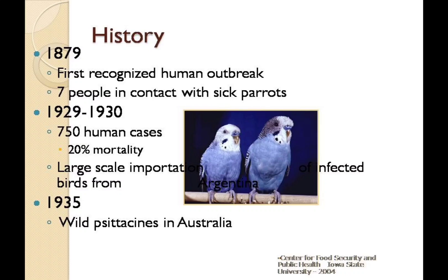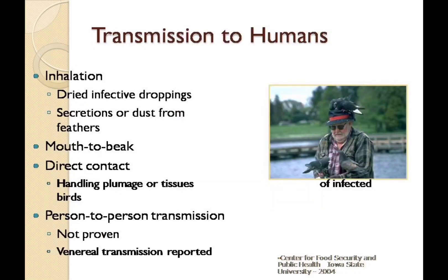Since the 1930 epidemic, numerous countries have instituted a complete import ban on psittacine birds. Smuggling has become common in the United States. In 1935, Chlamydophila psittaci was found to be prevalent in wild psittacines in Australia. Chlamydophila psittaci is excreted in the faeces and nasal discharges of infected birds. The organism is environmentally labile but can remain infectious for several months if protected by organic debris.